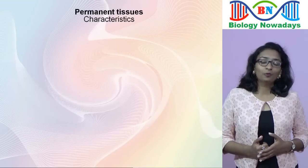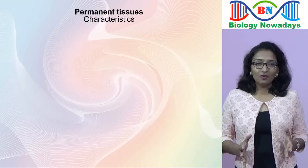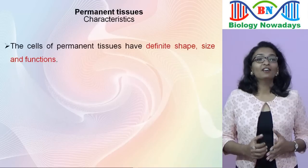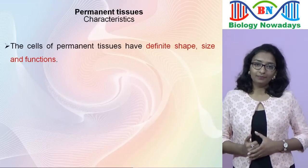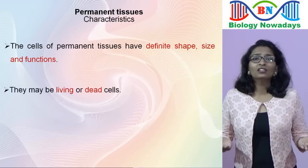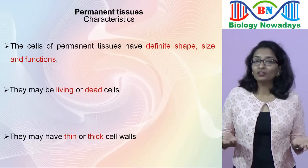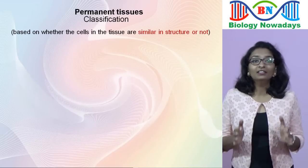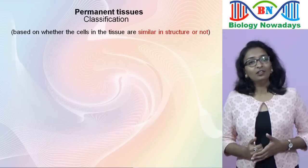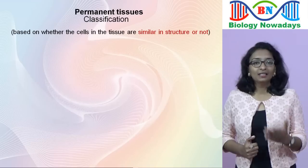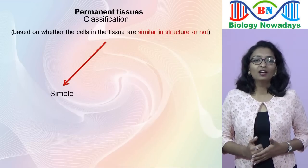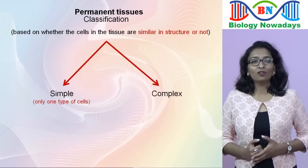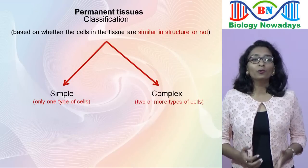After they lose their ability to divide, permanent tissues get differentiated — in other words, become specialized. The cells of the permanent tissues have definite shape, size and functions. They may be living or dead cells and may have thin or thick cell walls. Based on whether the cells in the tissues are similar in structure or not, permanent tissues are divided into two main groups: simple permanent tissues, which consist of only one type of cells, and complex permanent tissues, consisting of two or more types of cells.